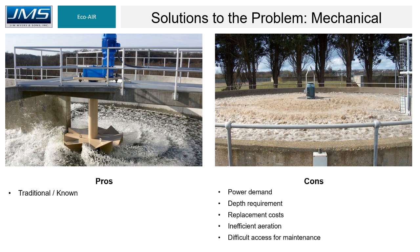The traditional mechanical aerator is an established, well-known piece of equipment that has been used for a long time. However, some cons include high power demand, a deeper water depth requirement, potentially inefficient aeration, difficult access for maintenance, and a potentially high replacement cost.